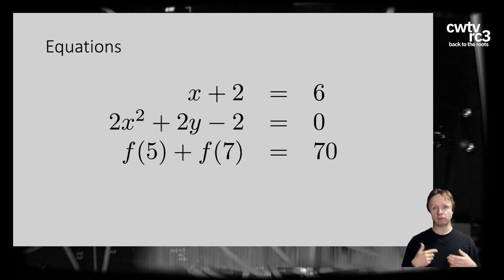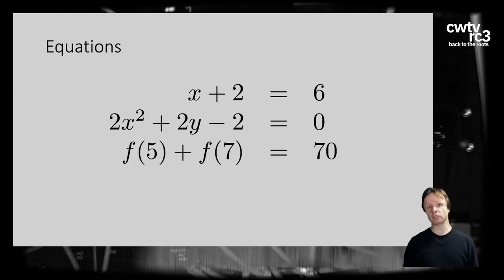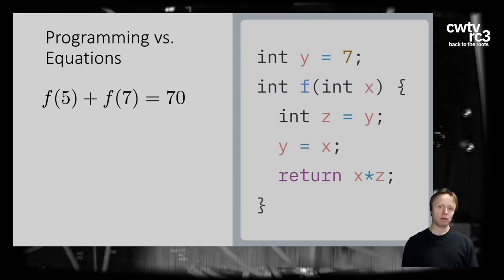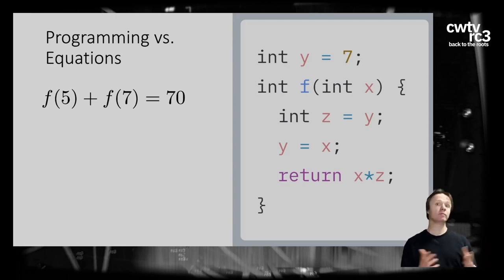There's also an equation involving a function whose definition is unknown: F(5) + F(7) = 70. Functions exist in software too, so we might use the language of equations involving functions to describe software functions. Walking through an example: calling F(5) where Y is initialized to 7, Z stashes the old value of Y (which is 7), Y is set to X (5), and we multiply X by the old Y: 5 times 7 equals 35. So F(5) returns 35.